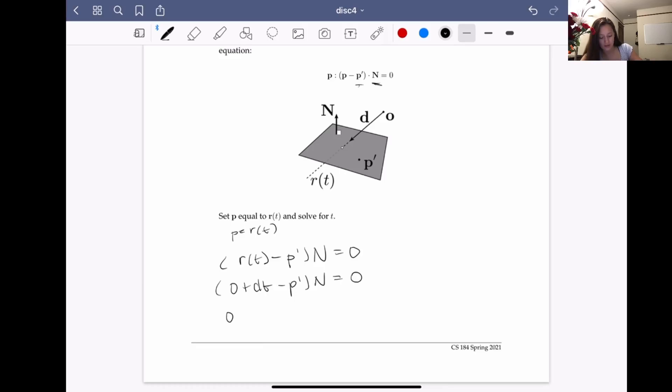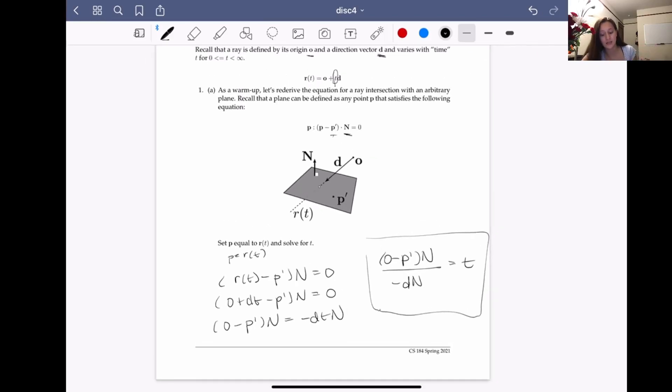I guess we get some nice music for our algebra. Okay, negative D dot N times T, and then that will give us O minus P' dot N over negative... sorry, this is a D. Okay, and this is our intersection test.